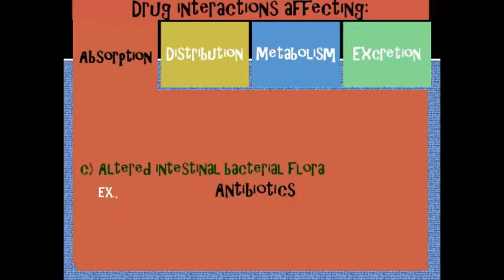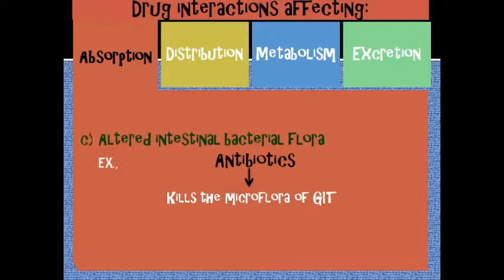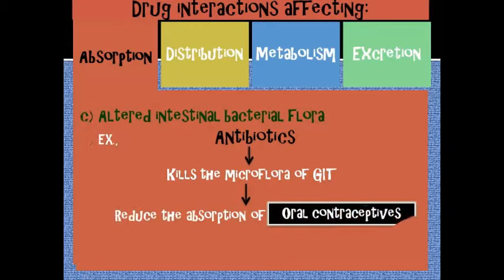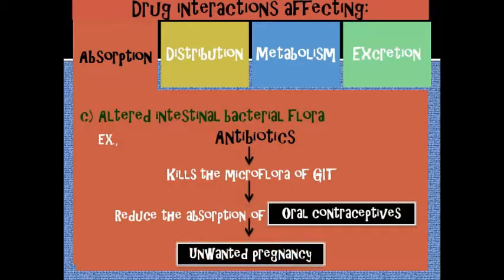Next is altered intestinal bacterial flora. For example, antibiotics kill the microflora of the GIT, which reduces the absorption of oral contraceptives and results in unwanted pregnancies.